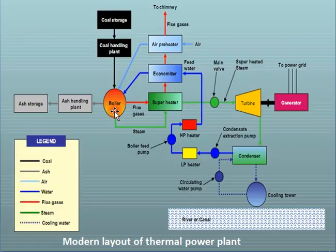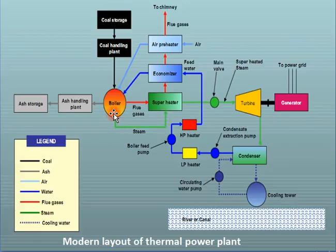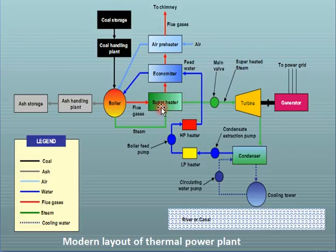Due to combustion, a large amount of heat is generated. This heat is transferred to the feed water, which is then converted into steam — high temperature and high pressure steam is generated inside the boiler. Now this steam passes through the superheater, where both temperature and pressure are raised further. In the superheater, the steam is converted into superheated form; the function of the superheater is to bring the steam to its highest temperature and pressure in superheated form.